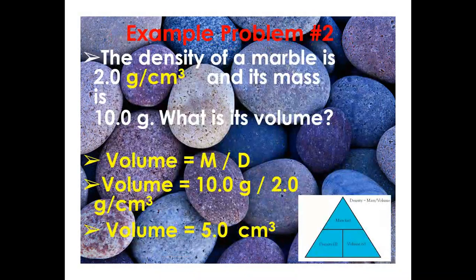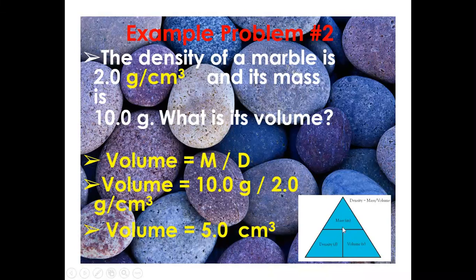Second problem: the density of a marble is 2 g/cm³ and its mass is 10 g. To find volume, use: Volume = mass ÷ density = 10 g ÷ 2 g/cm³ = 5 cubic centimeters.